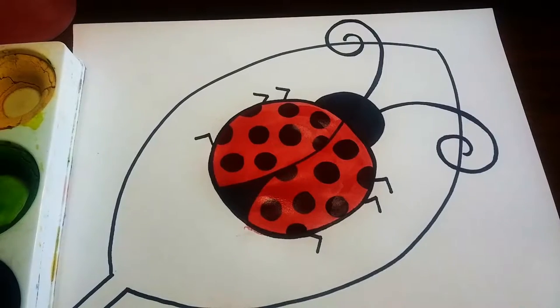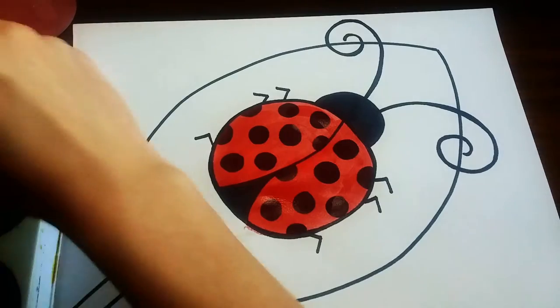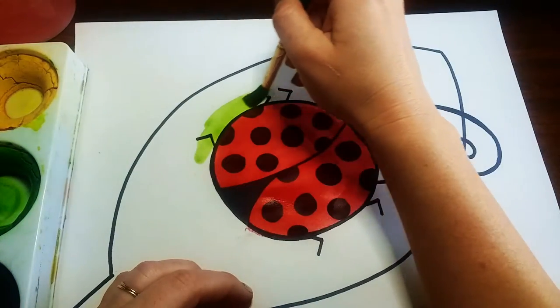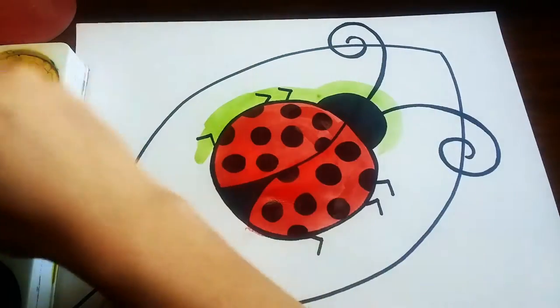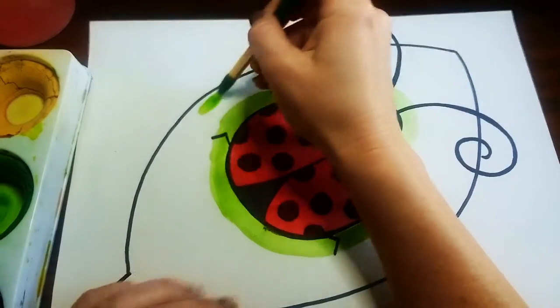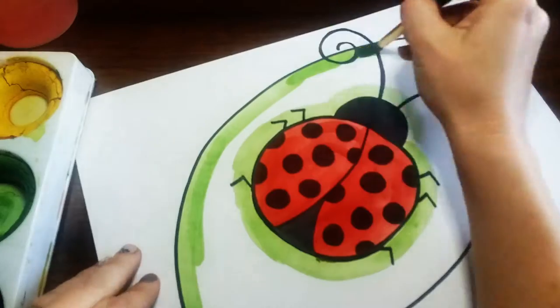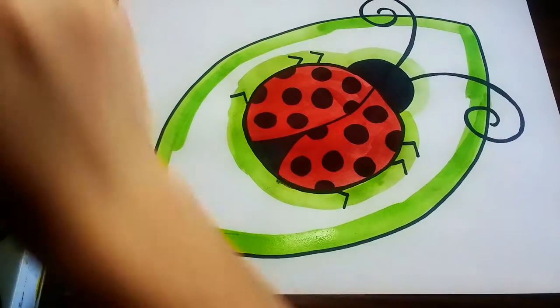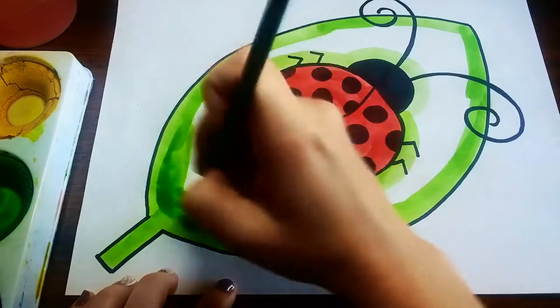Once my ladybug is all painted in I'm gonna wash my paintbrush, get some more water on there, and then I'm gonna pick up some of this green paint. And the easiest way to paint is to start by just tracing the outside of your ladybug and then also tracing the inner side of the leaf here. And once you have everything outlined now you can paint the whole inside of that leaf.